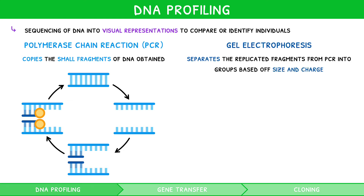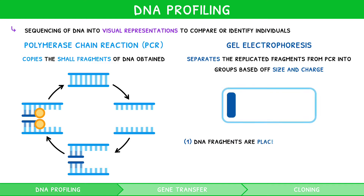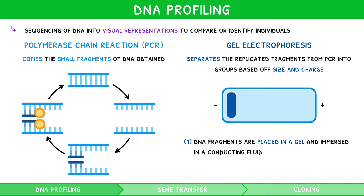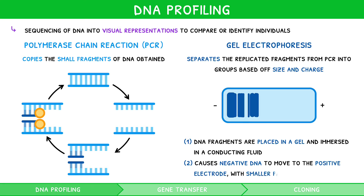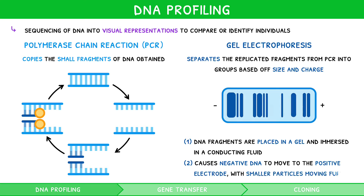During this process, DNA fragments are placed in a gel made of a mesh of filaments and immersed in a conducting fluid which is electrified. This causes negative DNA to move to positive electrodes, with smaller particles moving further. This produces a banded pattern unique to an individual.